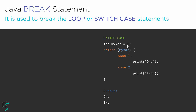Since myvar is equal to 1, in case 1 it should only print 1. But what happens is that when this condition becomes true, we get 1 as the output. But since we don't have a break statement here, case 2 and case 3, if present, all the conditions are executed following case 1. So we get 1 and 2 as the output.